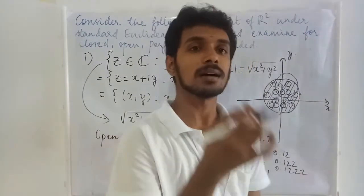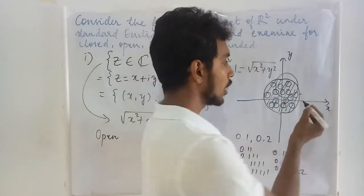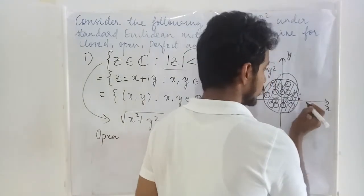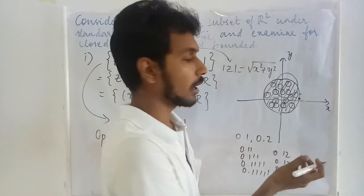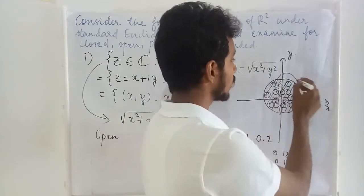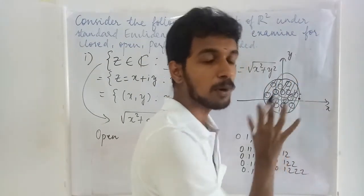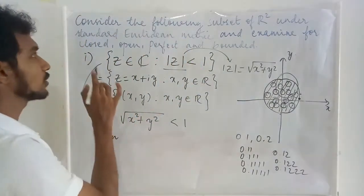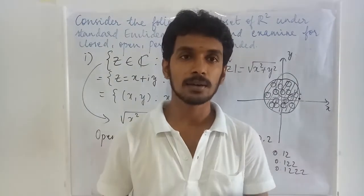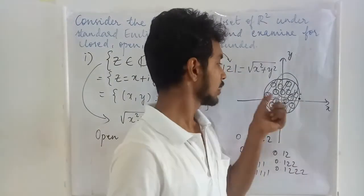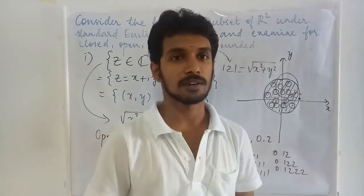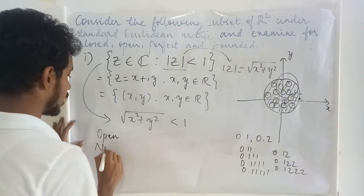If you check the points on the boundary, choosing a very small radius and identifying a neighborhood, you will get a few points of the set inside that neighborhood. Therefore, you can conclude that the points on the boundary are also limit points of the set. In order to check whether the set is closed, all the limit points of that set must be members of the set. Here, the points on the boundary are limit points of the set but they are not members of the set. Therefore, this set is not closed.